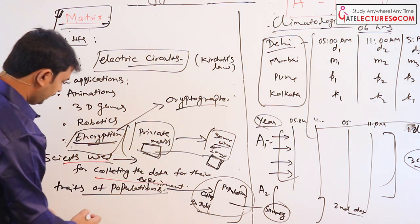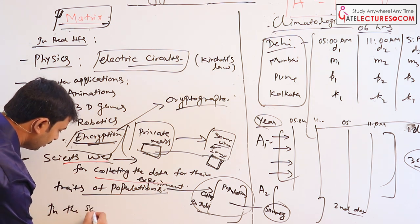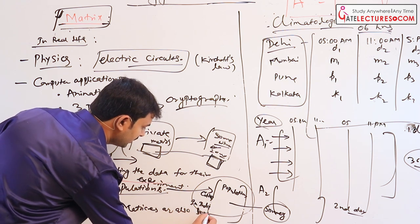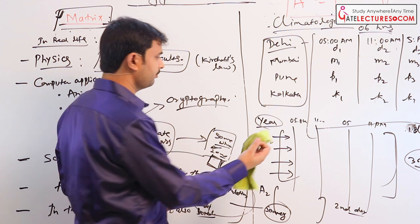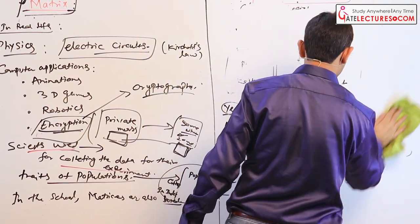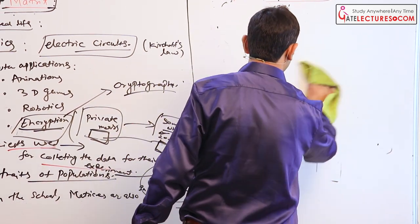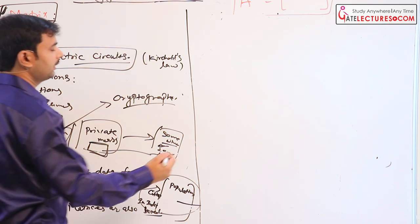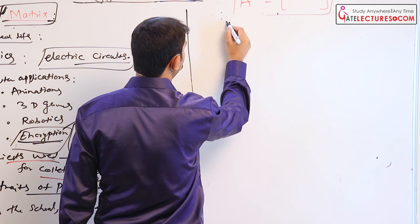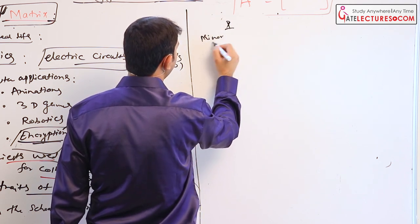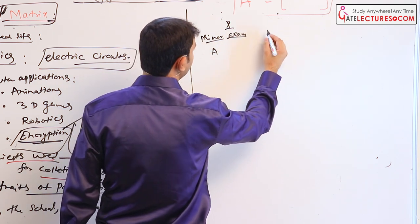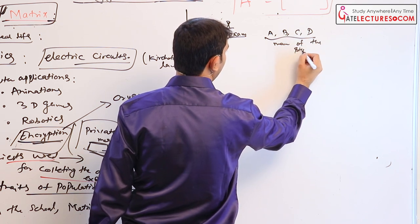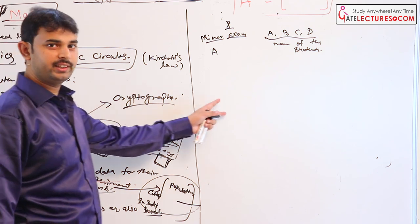If in the class, in the school, in a particular school, matrices are also used widely. So in the school, you can say, if in class 10th, an exam was held, say minor exam was held and suppose A, B, C, D are the names of the students. I want to explain here how in daily life, how matrices are used.